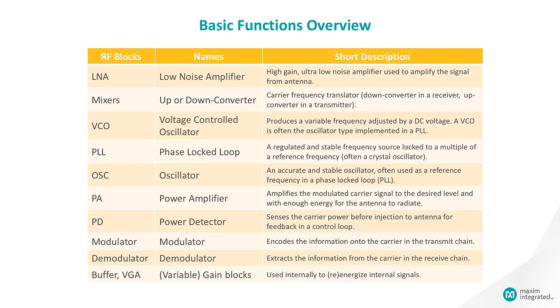As seen in the RF front-end diagram, each basic RF function has a specific role to play in the RF communication chain. The LNA amplifies very weak signals from the antenna, the modulator encodes the information onto the carrier, and the PLL generates the correct frequency to the antenna. For the remainder of this session, we'll focus primarily on two elements: RF amplifiers and mixers.